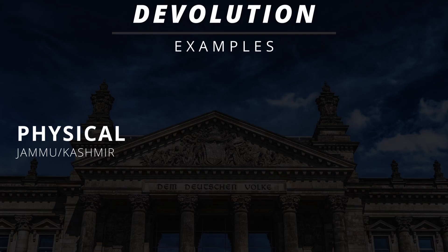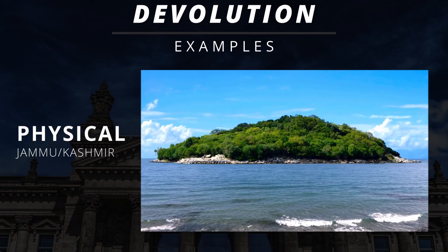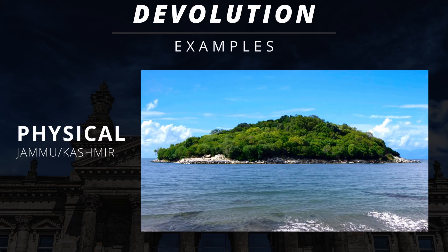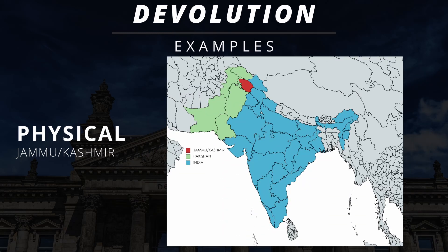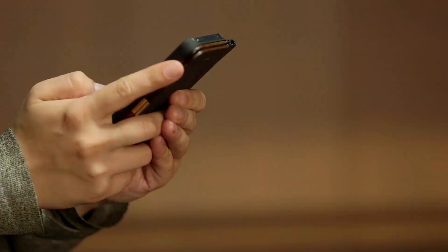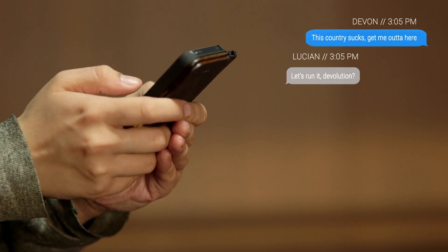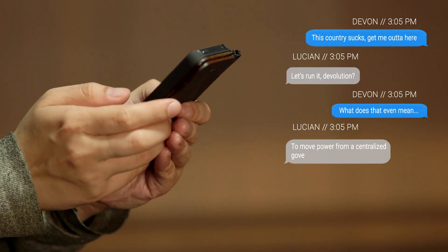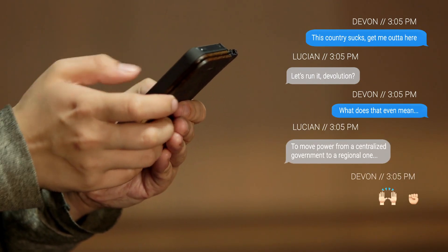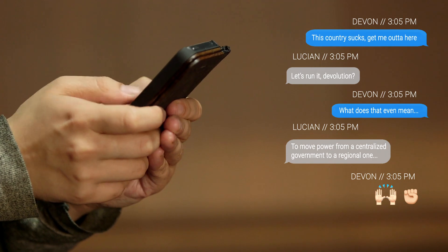There is also physical devolution, which can occur because of physical isolation in the form of actual distance, like islands or mountain ranges that separate regions. For example, Jammu and Kashmir is separated by the Punjab and Himalayan mountains, which can lead to devolutionary sentiment as people feel isolated from the rest of the Pakistani and Indian population. The recent rise of devolution and political movements can be attributed to the advancement of technology, specifically cell phones and the internet, as people have easier access to communication methods and political conversations can diffuse at a faster rate.